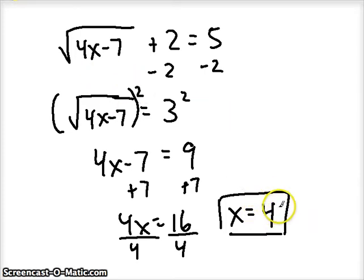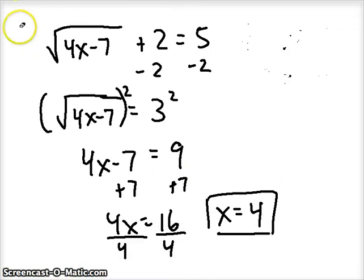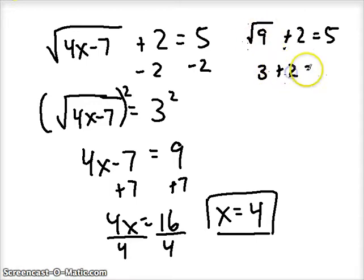We didn't take the square root, we undid a square root. Let's check our solution. If we plug 4 in for x, so we get 4 times 4, that's 16. 16 minus 7 is 9, so we've got the square root of 9 plus 2 equals 5. Now when I take the square root of 9, since I'm not solving anymore, I'm just checking my solution, I'm going to use the positive square root. So 3, and 3 plus 2 equals 5. So it checks out. Let's try another example.